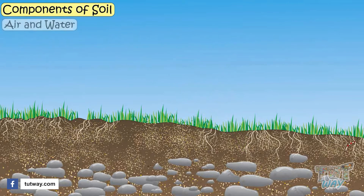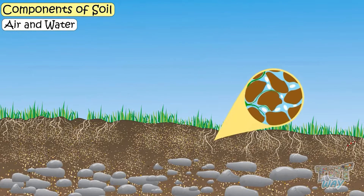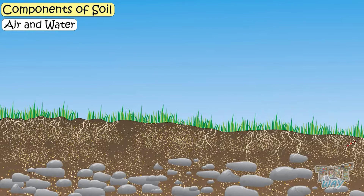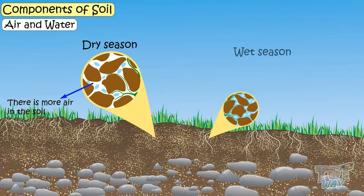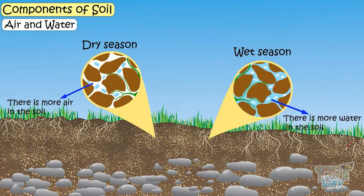Air and water are present inside the soil pores. During dry season, air is more in the soil, and during wet season, water is more inside the soil.